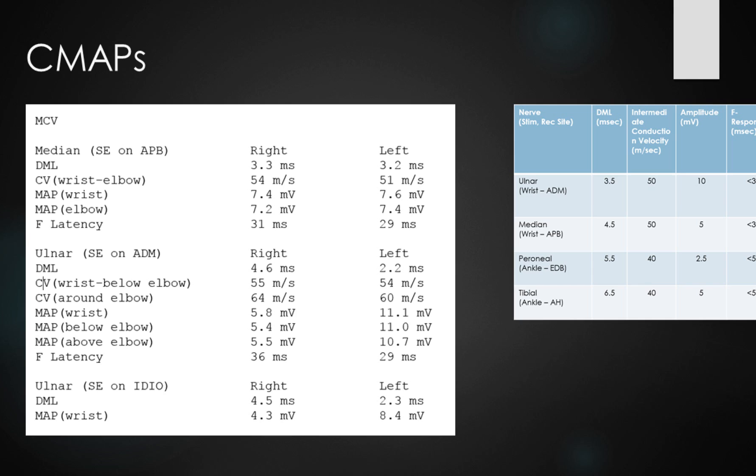Let's refocus now on the stimulation of the ulnar nerve to the first dorsal interosseous muscle. Again, we can see a similar prolongation of the distal motor latency, 4.5 milliseconds, similar to that of the distal motor latency when we're stimulating the ulnar nerve to the ADM. And again, it's contralaterally delayed compared to the left-hand side. The motor amplitude is also reduced at 4.3 millivolts compared to 8.4.